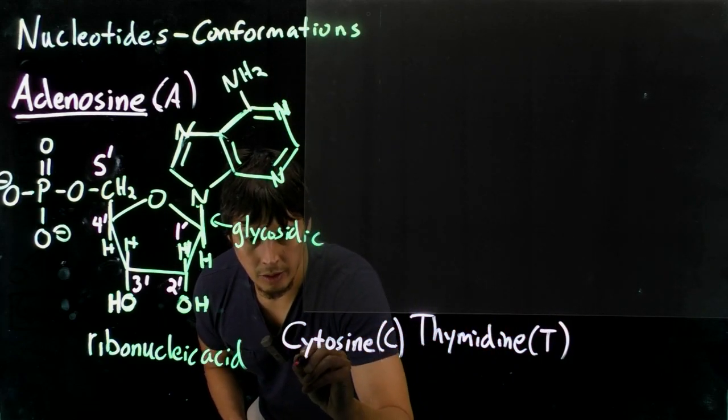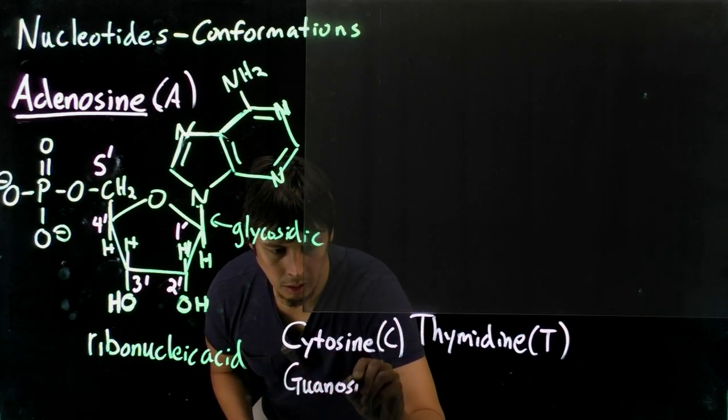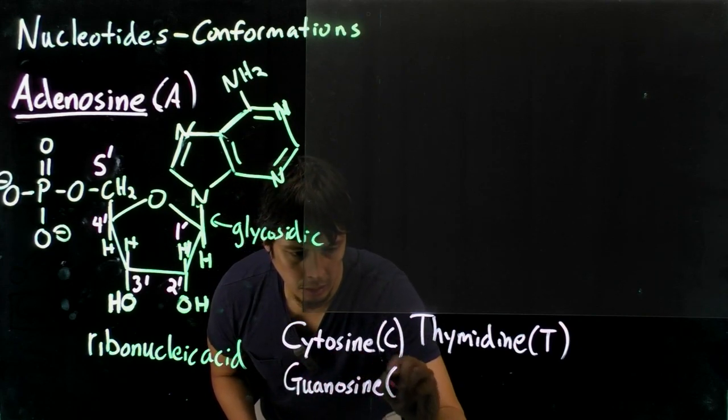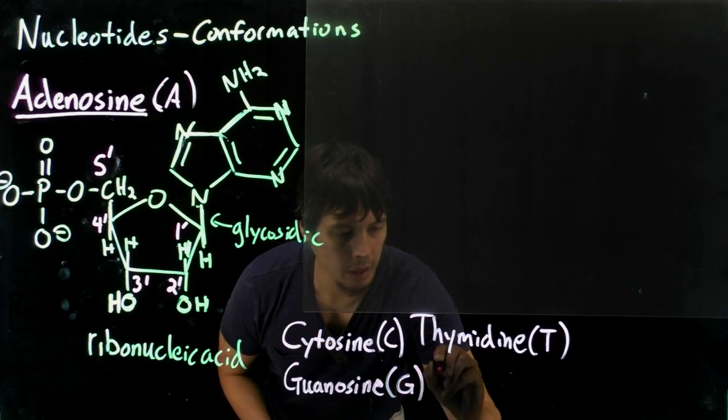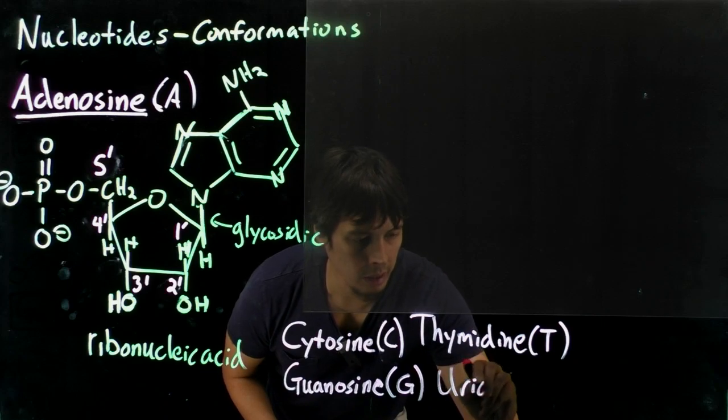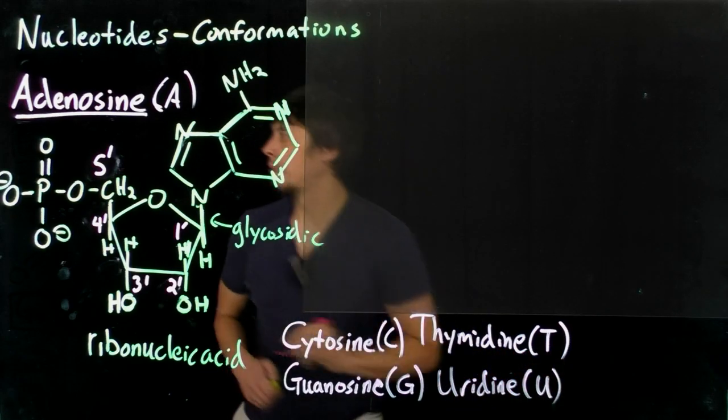We have guanosine, G, and for RNA uridine, U.